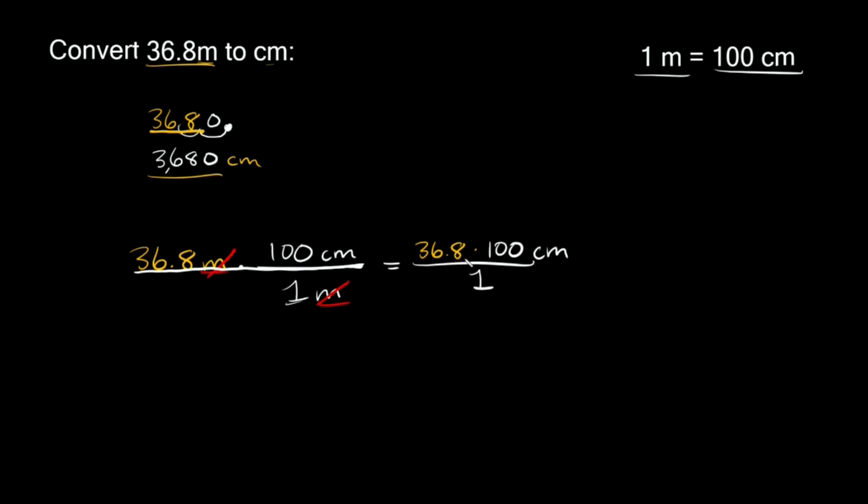So 36.8 times 100, that's equal to 3680, and 3680 divided by one is still just 3680. And then we still have our units right here, centimeters, so we'll bring those over also. So as you can see either way, we got the exact same answer.